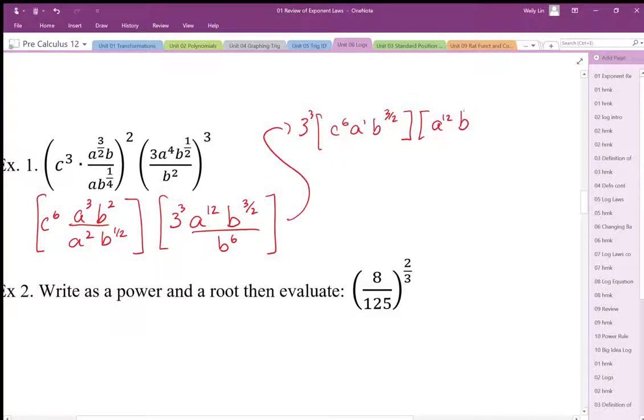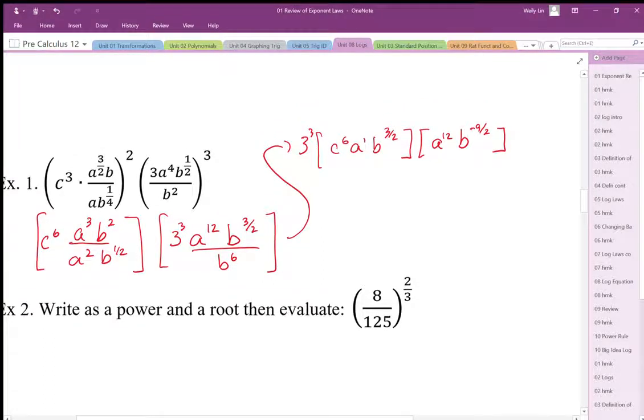I'll do it in terms of over 2, so it's going to be negative 9 over 2, because I have more on the divide. So I should end up being minus power. The negative power means divide.